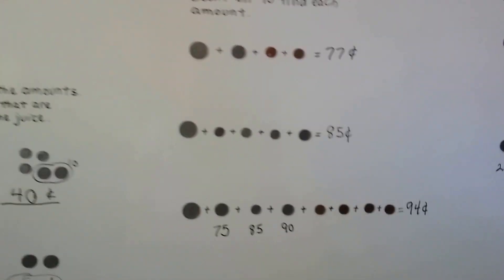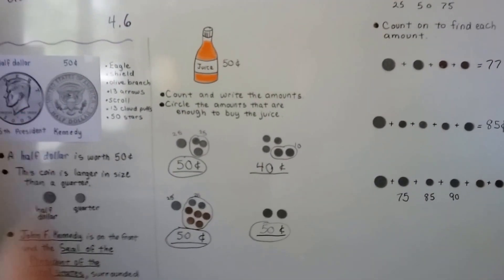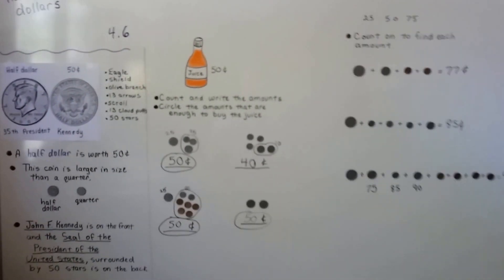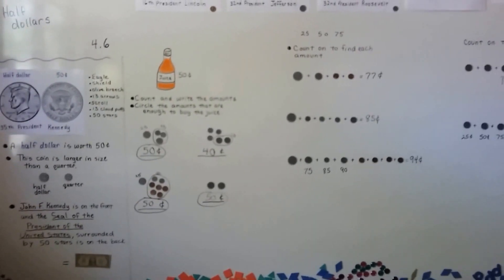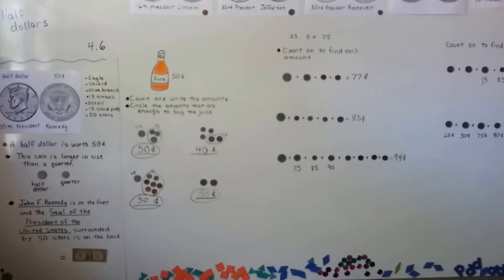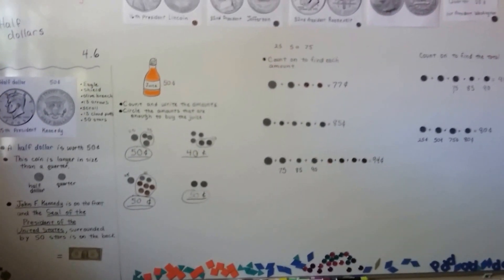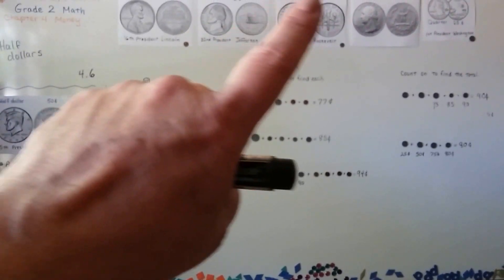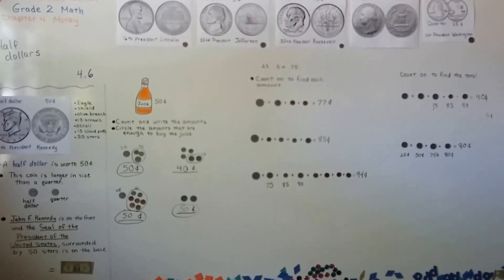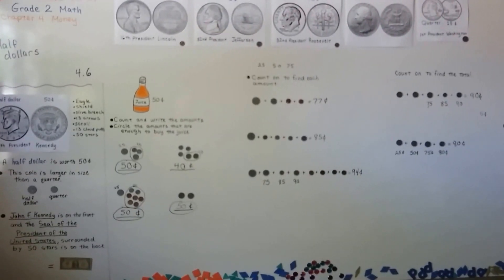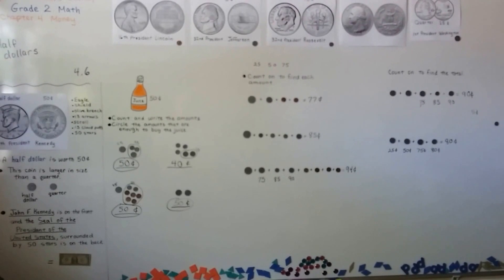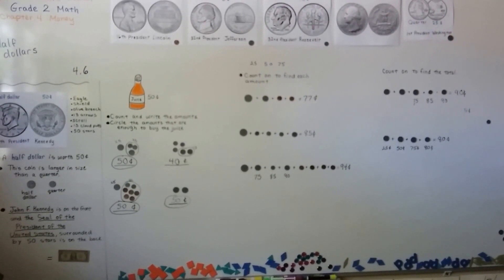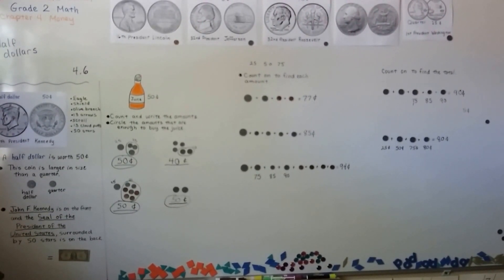Now you know what a half dollar is — it has a picture of John F. Kennedy on the front and the presidential seal on the back with the eagle, the olive branch, and more. The olive branch appears on other coins too, like the dime. We'll continue talking about money — see you next time!